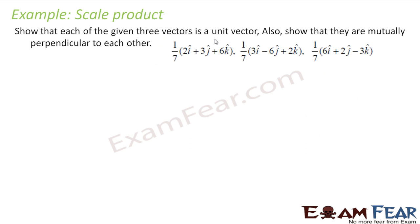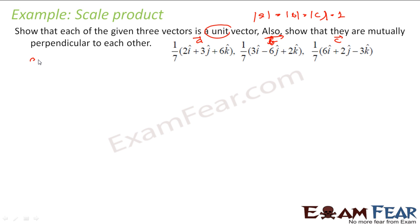In this case, we have to prove that each of these vectors is a unit vector. Let us suppose this is A vector, this is B vector, this is C vector. We have to prove that mod of A equals mod of B equals mod of C equals 1, because it is a unit vector. Second, we have to prove they are perpendicular to each other. If they are perpendicular, A dot B equals A into B into cos theta, that is cos 90, which is 0. Since all are perpendicular, A dot B equals 0, B dot C equals 0, and A dot C equals 0.